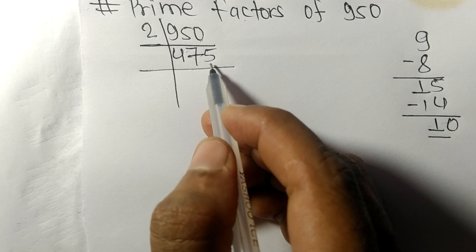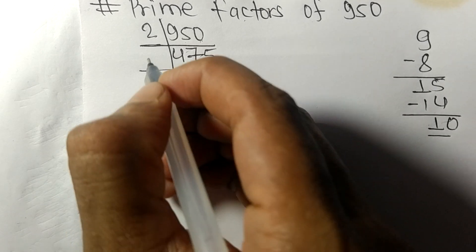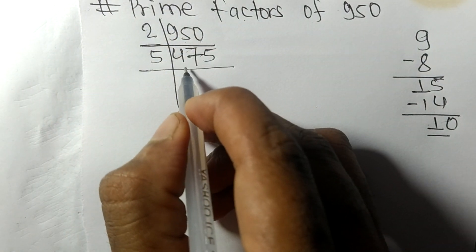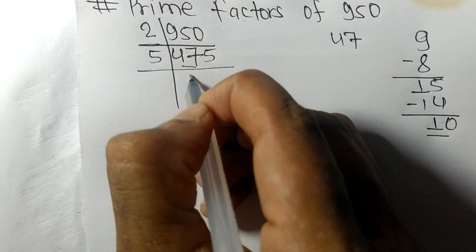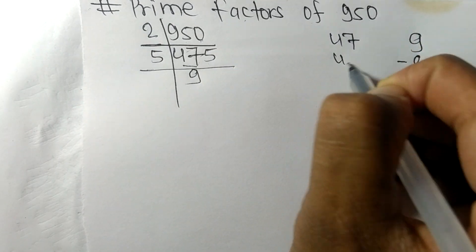So it is exactly divisible by five. So here we have forty seven. Five times nine means forty five. On subtracting we get two.